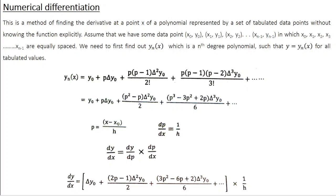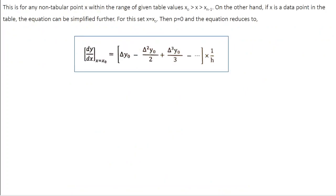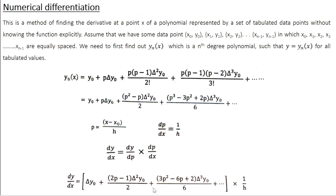This is a general expression typically used when your given x value is not a tabular point. For example, if your x values are 1, 2, 3, 4, 5 with corresponding y values and you are asked to find the derivative at x = 1.5 — a non-tabular x point not part of the experimental data — you can use this general expression.